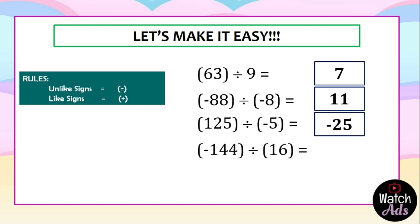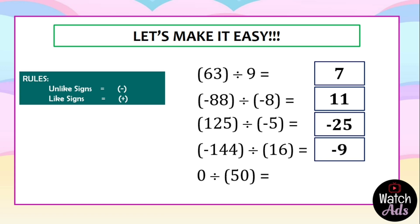For our fourth example: negative 144 divided by 16. 144 is negative and 16 is positive, therefore they are unlike signs. The final answer should be negative. We divide 144 by 16 — the final answer is negative 9.